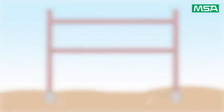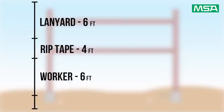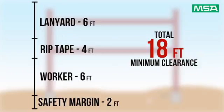Now let's calculate the minimum clearance needed for a safe fall distance. Bob is on a six-foot lanyard with four feet of shock-absorbing rip tape. He himself is six feet tall, and we're going to add an additional two feet as a safety margin. This gives us a total of 18 feet minimum clearance from the anchor point needed to ensure Bob's safety.